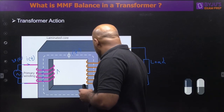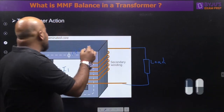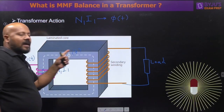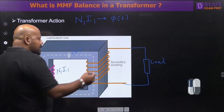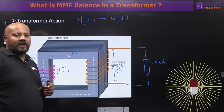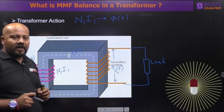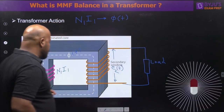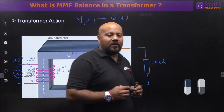This MMF establishes a time-varying flux in the core. Now, this time-varying flux is also linked with the secondary winding, so some EMF is going to be induced at the secondary side. Also notice that this time-varying flux is linked with the primary winding as well, so there will be some induced EMF due to the self-inductance of the primary winding — we call these e1(t) and e2(t) as instantaneous values.